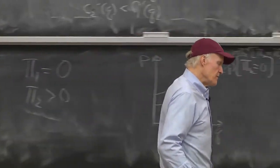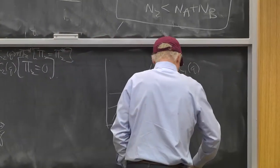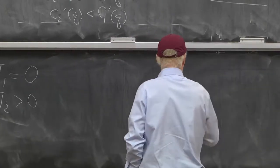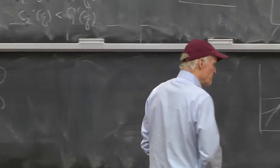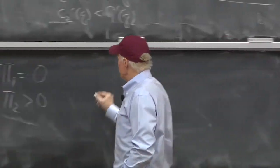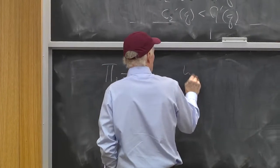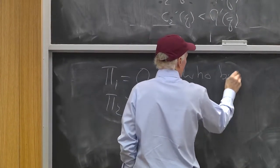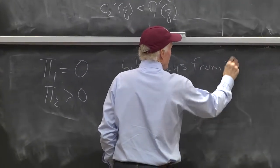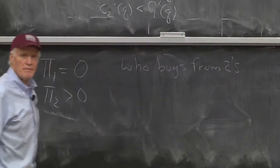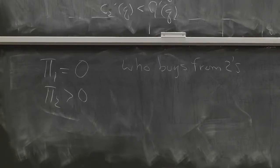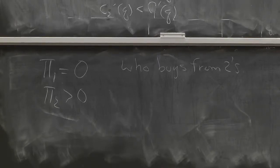So, what else do we know? What do we know? Who's going to buy? Who's going to buy from the twos? Who must be buying from the twos in equilibrium? The twos exist. Somebody's buying from them. Who must be buying from the twos?